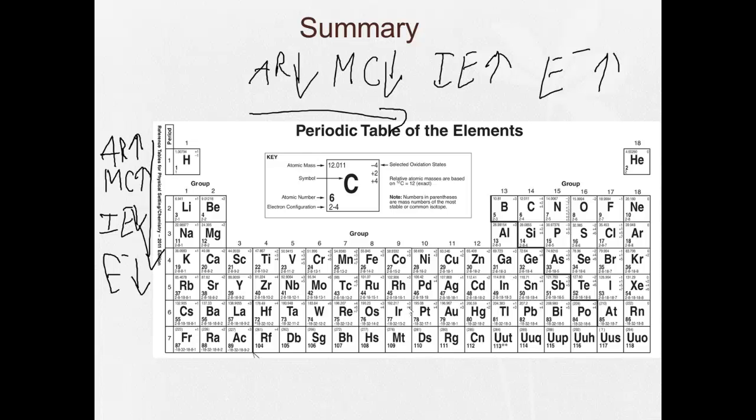So we can see some trends here. What's going to have more metallic character, sodium or aluminum? Well, since metallic character decreases going across, sodium has more. Our most electronegative element? Fluorine. Our least electronegative element? Francium. What's going to have a larger atomic radius, calcium or bromine? Well, atomic radius decreases going across, so calcium will be larger. Bromine will be smaller.